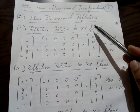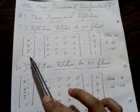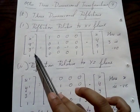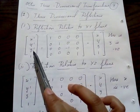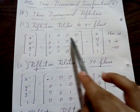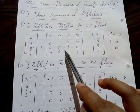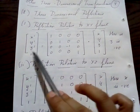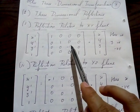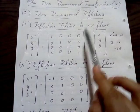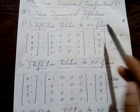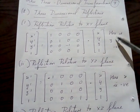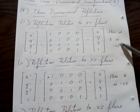When doing reflection across the XY plane, make use of this matrix for the new coordinates X dash, Y dash, and Z dash. All diagonal entries will be one except for Z — Z will be minus one when reflecting in the XY plane. This is applied to the old coordinates X, Y, Z, and Z becomes negative.